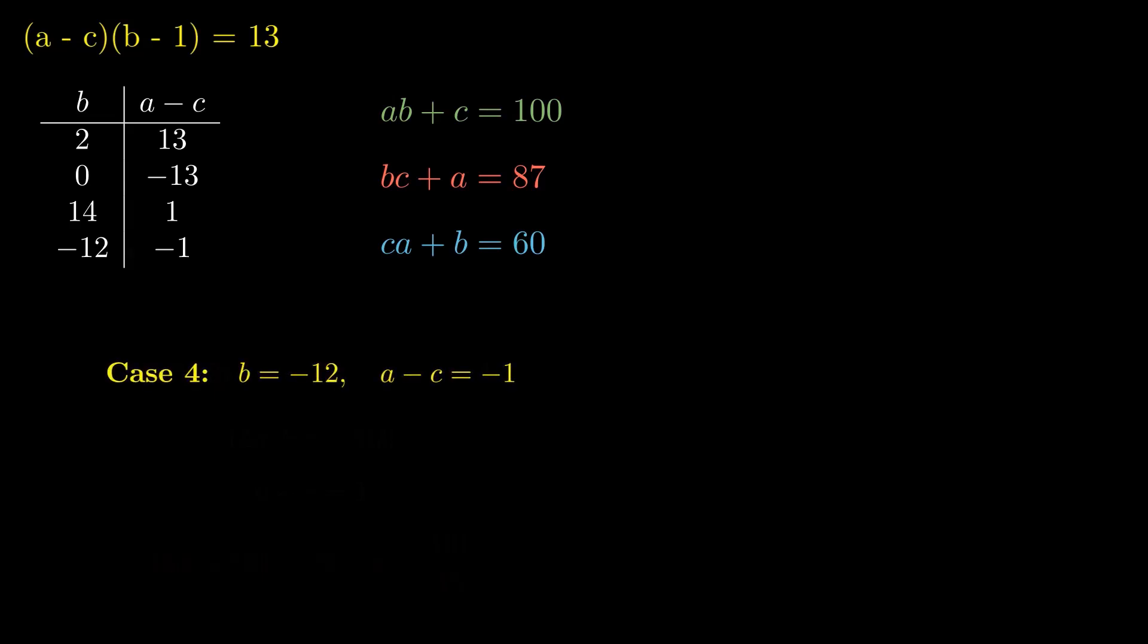we set B to negative 12 and A minus C to negative 1. We solve and finally, we get valid integers. A is negative 9 and C is negative 8. This is looking good.